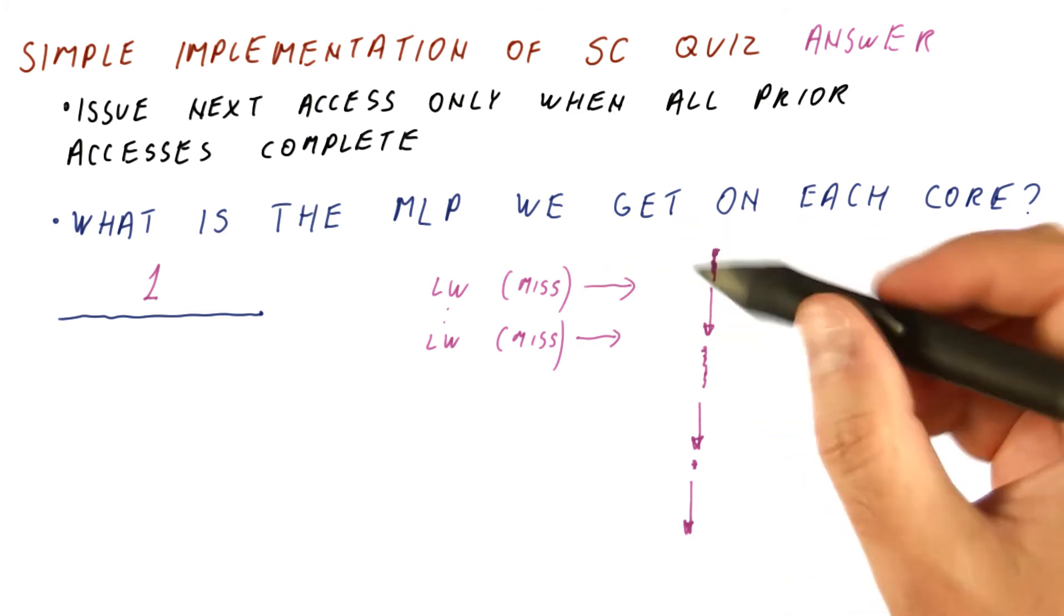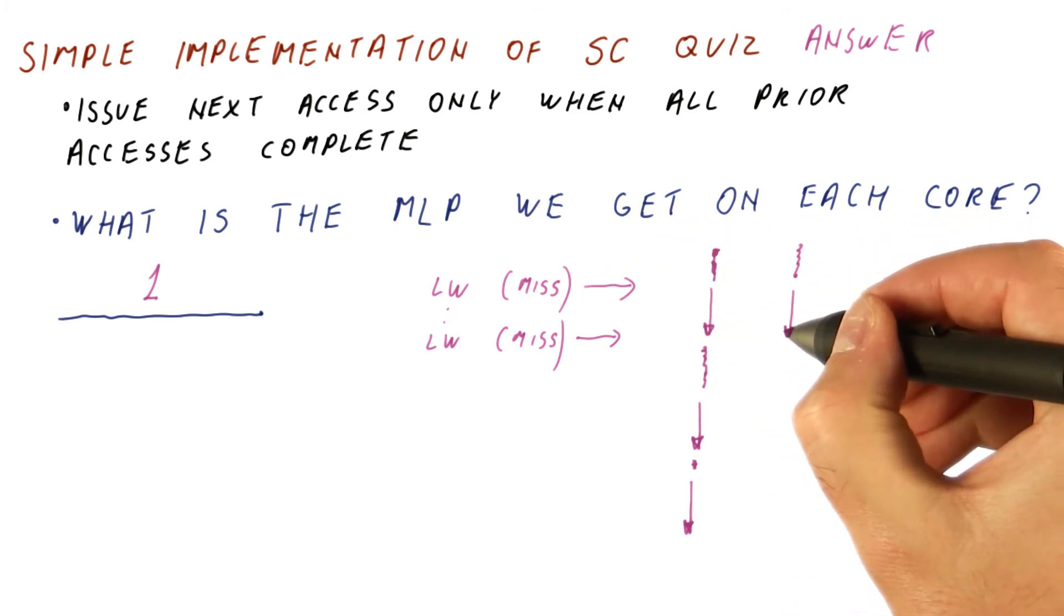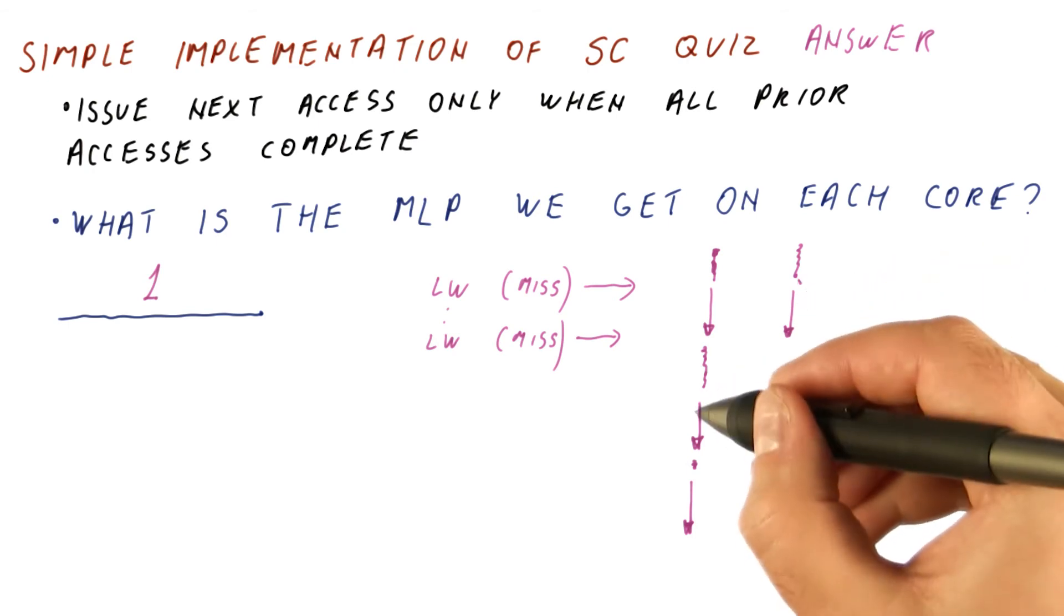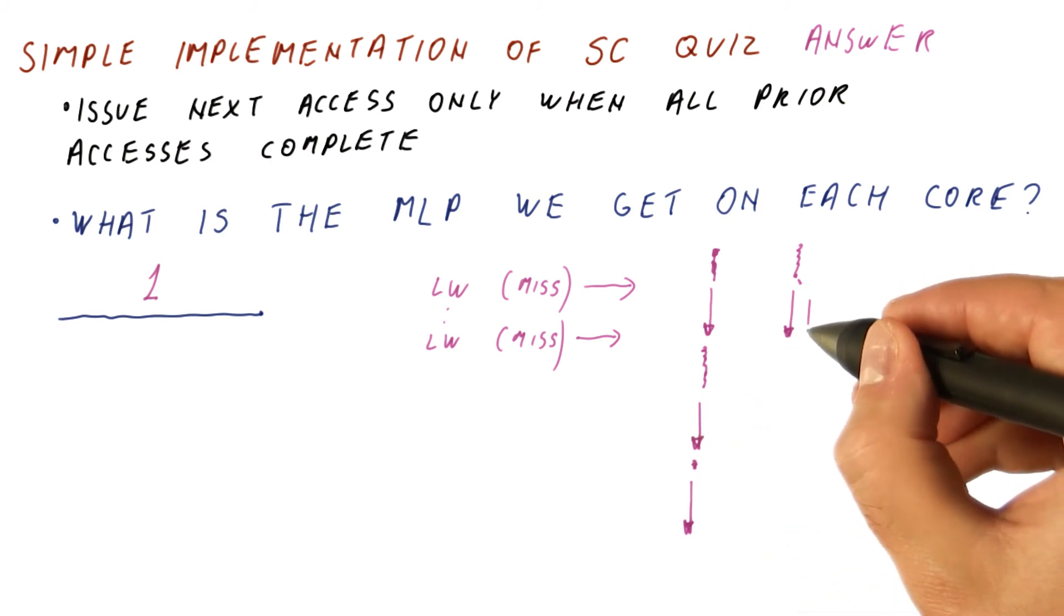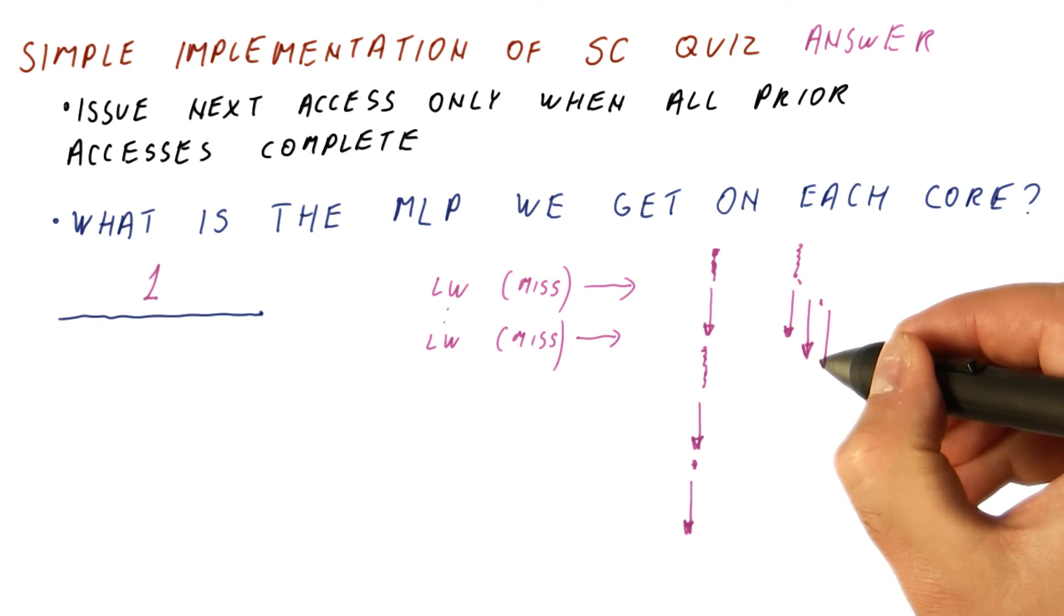With memory level parallelism, we execute, we send a request to memory, now we'll wait for it. But meanwhile, we execute a little bit more and hopefully find that next miss. In which case we can overlap misses and hopefully we will find more than just two.